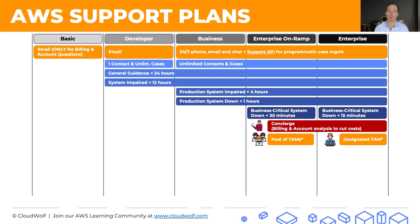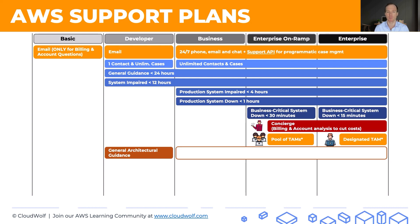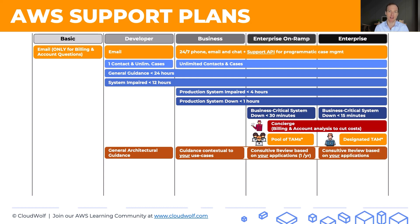For architectural guidance: in the Developer plan, you only get general architectural guidance. In the other three plans — Business, Enterprise on Ramp, and Enterprise — you get guidance specific to your use cases and applications. Business provides contextual guidance, Enterprise on Ramp offers one consultative review per year, and Enterprise provides more than one consultative review. The key exam distinction is general guidance in Developer versus specific guidance in the other three.